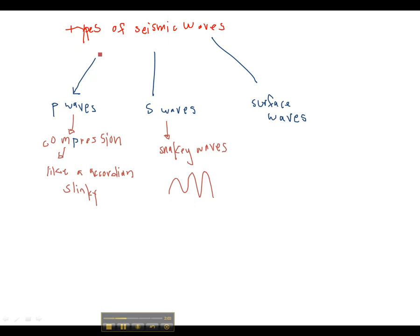And P waves always come before S waves. The last type of wave are surface waves, and these are when P and S waves come to the surface.